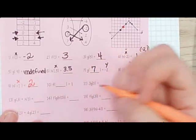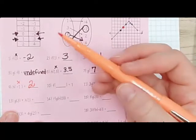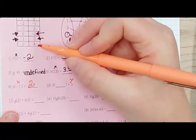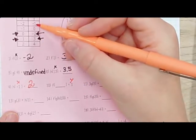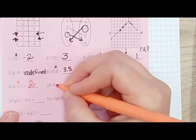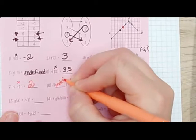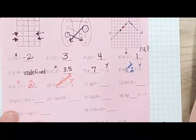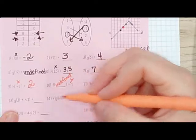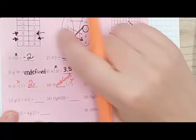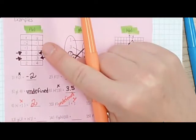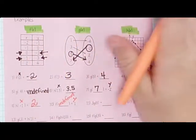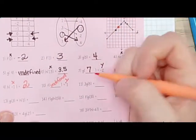Number 10: f of something gives us 1. That means the y-value equals 1. We just have points here, so the answer is 1.